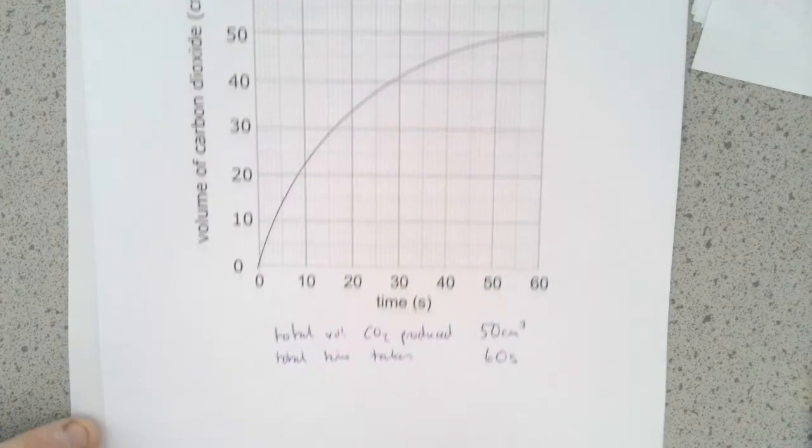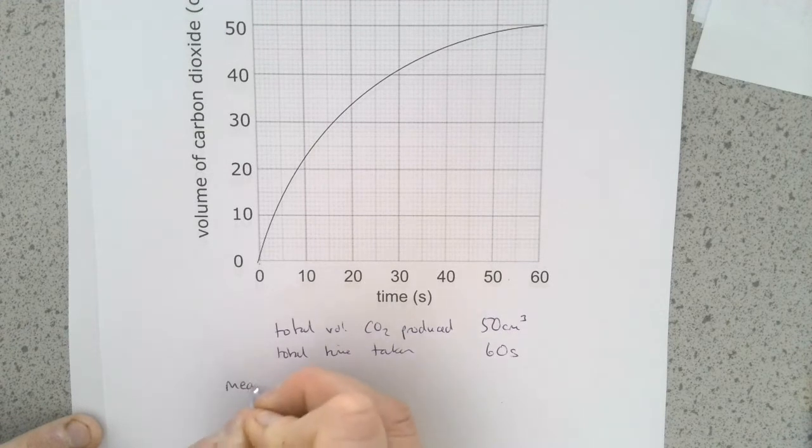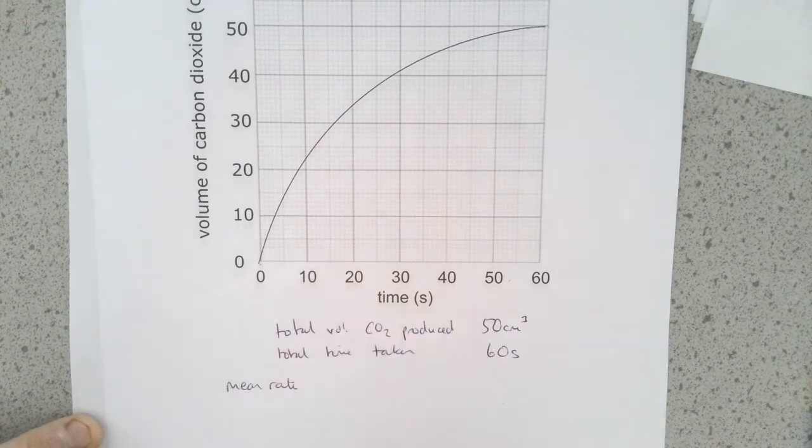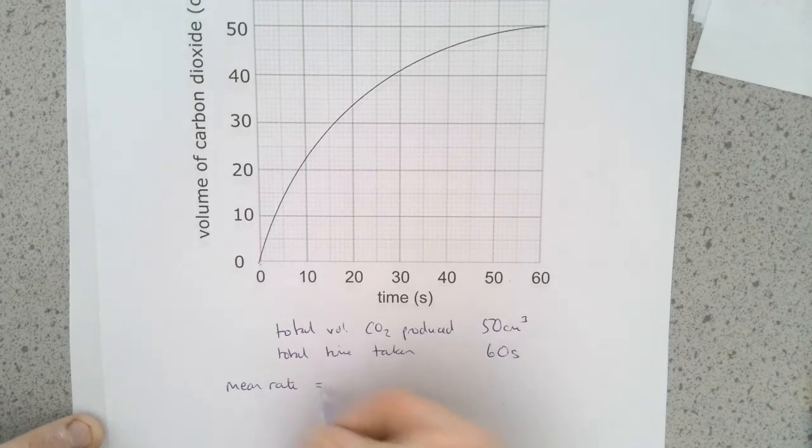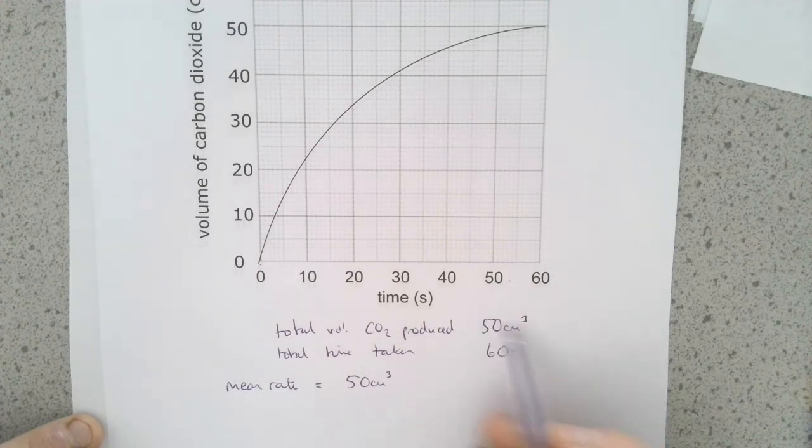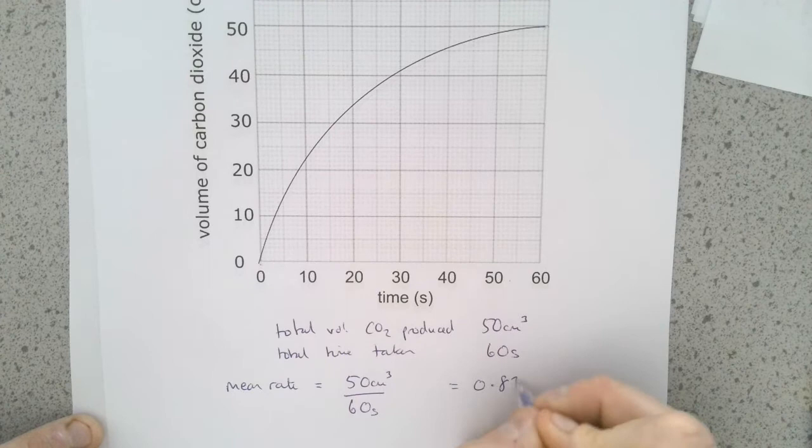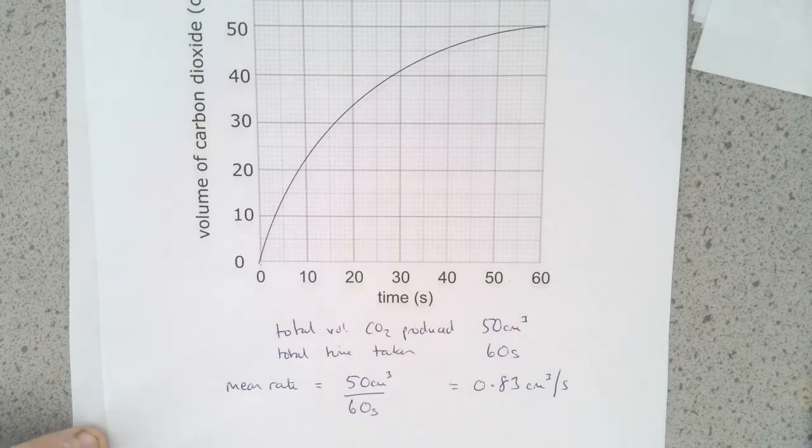So in order to calculate the rate, in this case, this is going to be the mean rate of reaction because we're looking at the rate over the whole period or course of the reaction. So the mean rate is going to be equal to 50 cubic centimeters, the change in amount or change in volume of product, divided by the time taken. So our mean rate here would be 0.83 centimeters cubed per second.